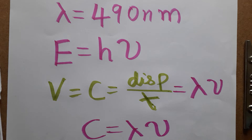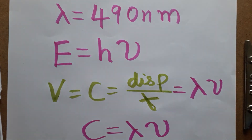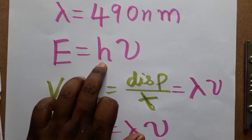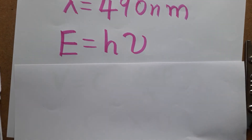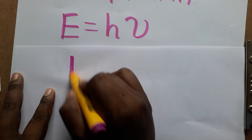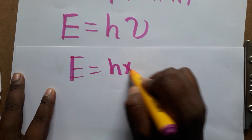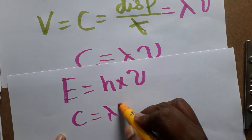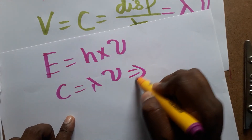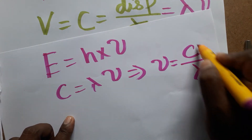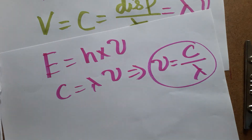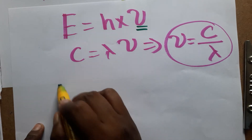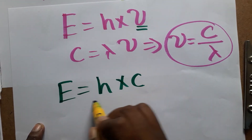We are given wavelength and need to find energy. In the formula E = hf, since c = wavelength × frequency, we can write frequency = velocity divided by wavelength. Therefore, energy equals Planck's constant times velocity divided by wavelength: E = hc/λ.